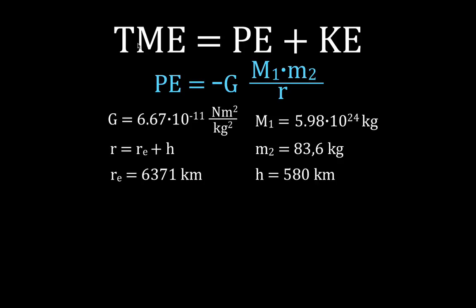Now the total mechanical energy — TME as I wrote here — is simply the sum of its potential energy and its kinetic energy. All we're going to do is calculate the potential energy, then calculate the kinetic energy, each one of those things step by step. And then we'll just add them together at the last slide. It's kind of an interesting result, I think.